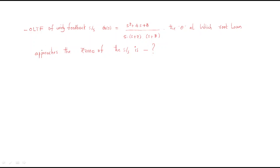Hello everyone. In this session we will discuss some problems regarding root locus. The first problem: the open loop transfer function of a unity feedback system is given as G(s) = (s² + 4s + 8) / (s(s+2)(s+8)). The question is asking for the angle at which the root locus approaches the zeros of the system — that means we need to find the angle of arrival.